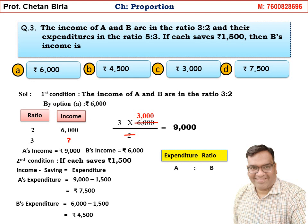Now we find the expenditure ratio of A to B: 7500 is to 4500. Removing double zeros gives 75 is to 45. Dividing by 5 gives 15 is to 9, and further dividing by 3 gives 5 is to 3. This expenditure ratio 5 is to 3 matches what the question states, confirming Option A is the answer.